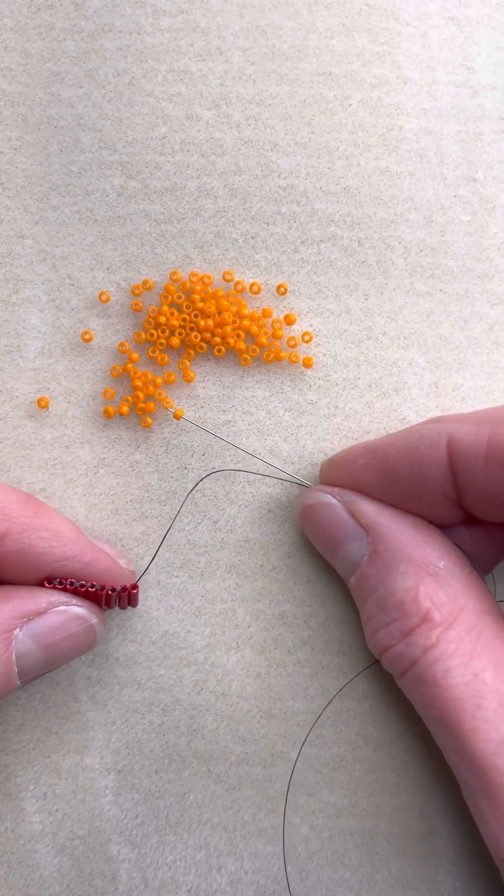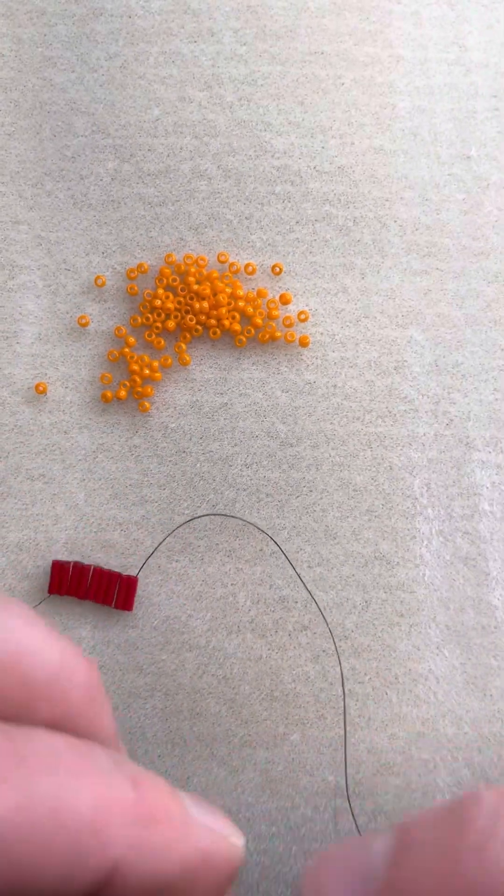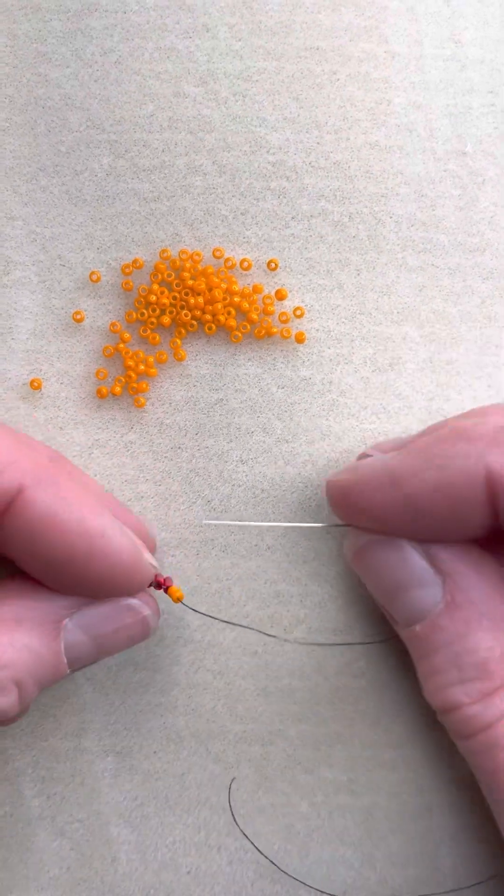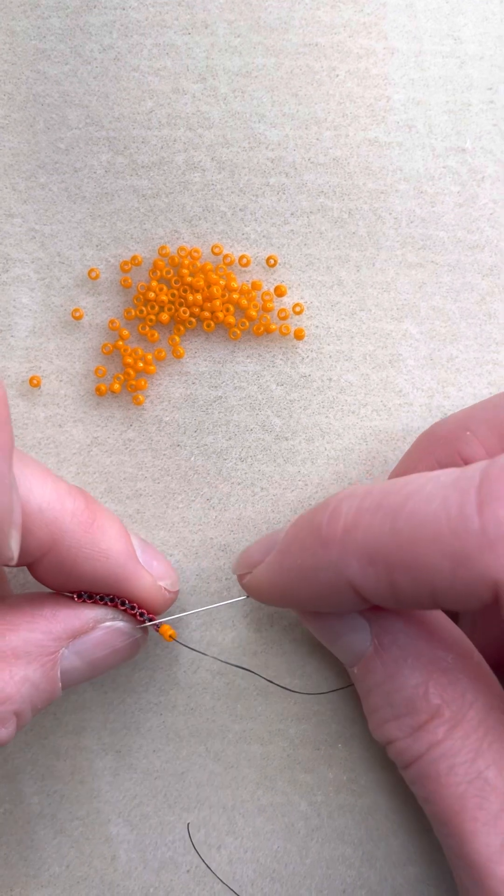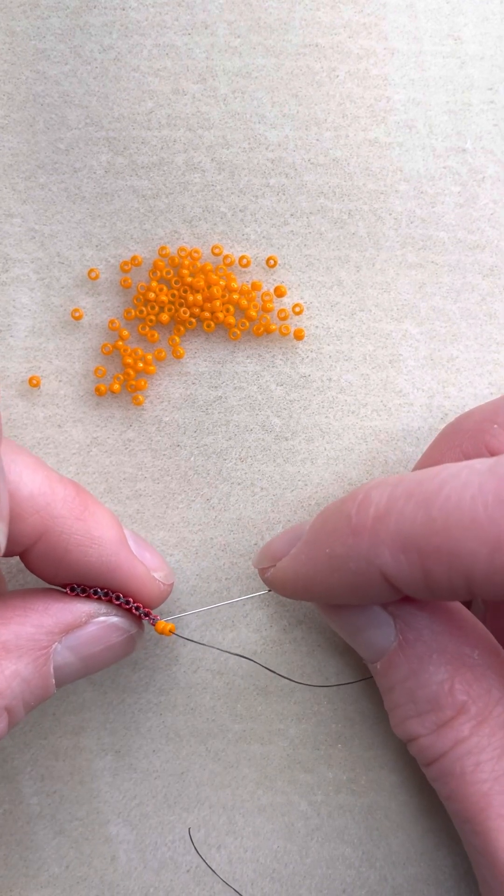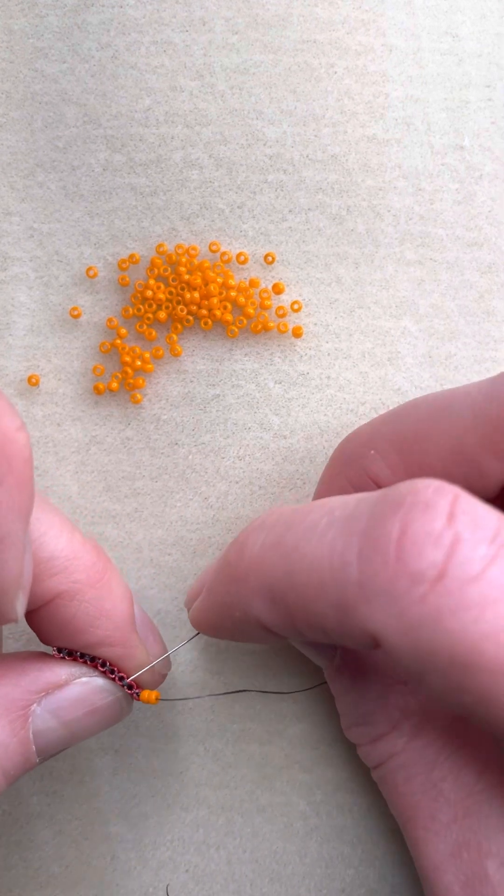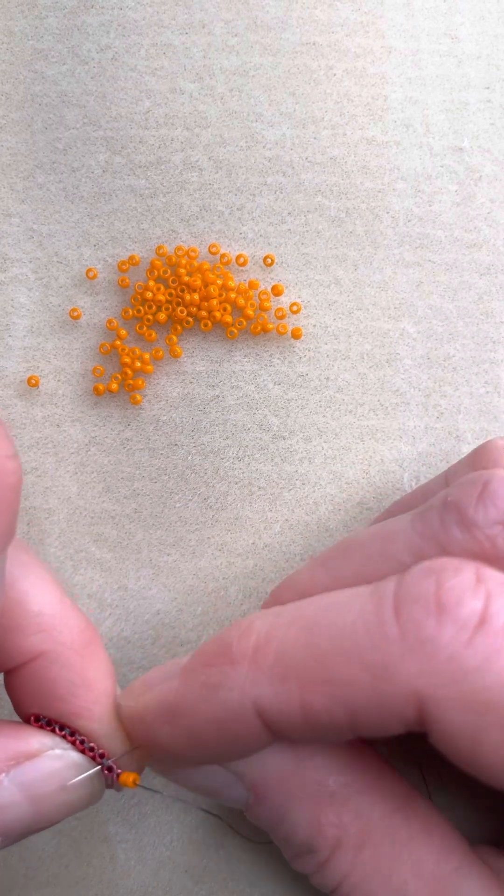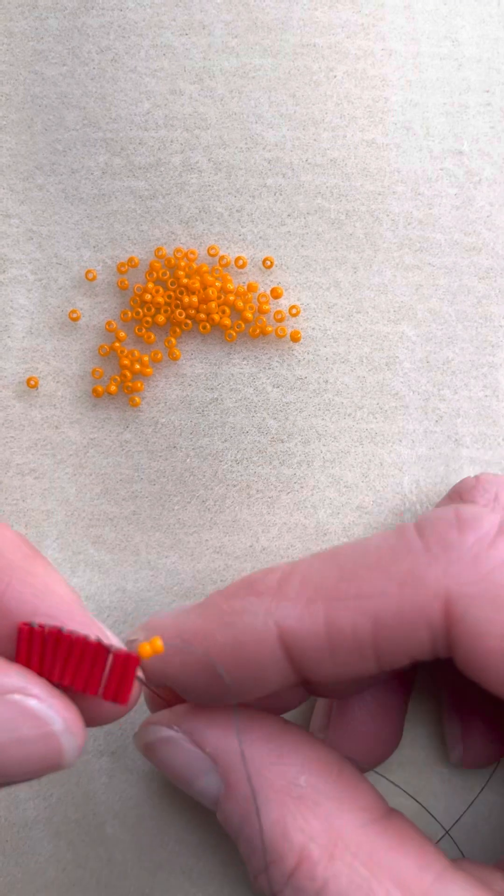So we start by putting on two of the seed beads. The beginning of the row is different than the rest of the row. Every time you begin, you don't capture the first bridge, you go to the second. Because we've just put two beads on, so we're going to the second bridge. We go through two of the bugles to get underneath that bridge.